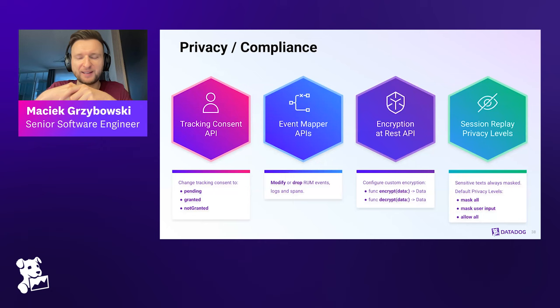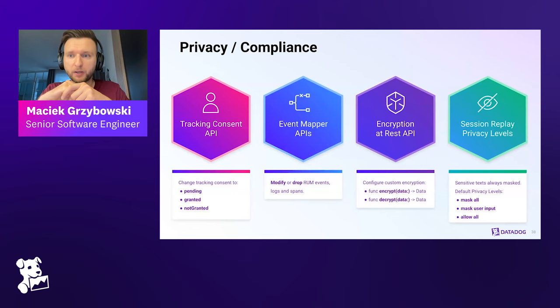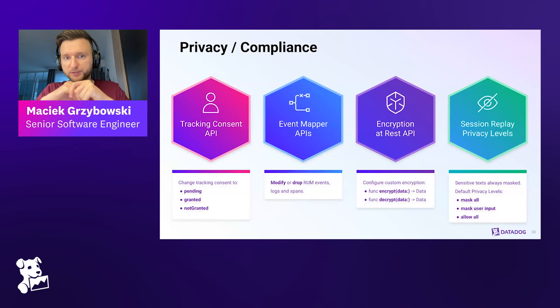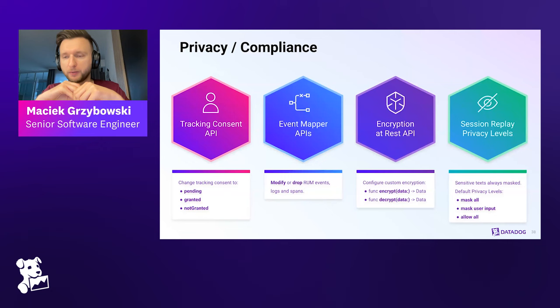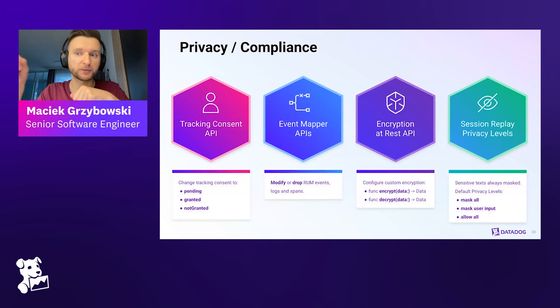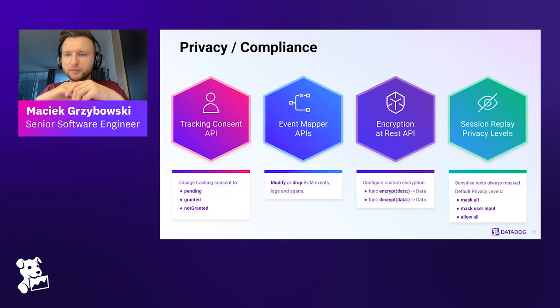Second, before any data is sent from our SDK to our servers, you're given a chance to redact or drop information with event mapper APIs. With those mapper APIs, you can intercept every single log, span, or RUM event, see what's inside, redact sensitive information — for example in URLs — or drop the event entirely. Third, some regulations enforce additional data encryption requirements. For that, we offer an encryption at REST API — you can configure custom encryption for writing and reading data, and we will use it to save any information on the user's device and decrypt it right before upload.